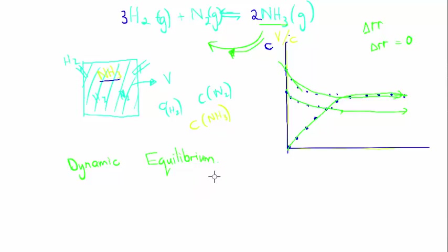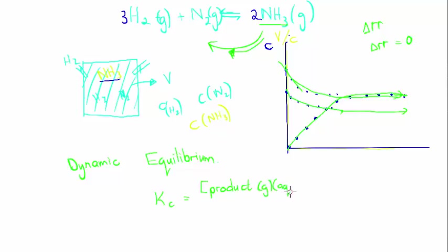At equilibrium, there is now a value defined — that's the Kc value. What we do with the Kc value is take the concentration — using square brackets — of the products, but only for gases and aqueous solutions. Because we're working with concentration, and the only time we work with concentration is when we work with gases and aqueous solutions.